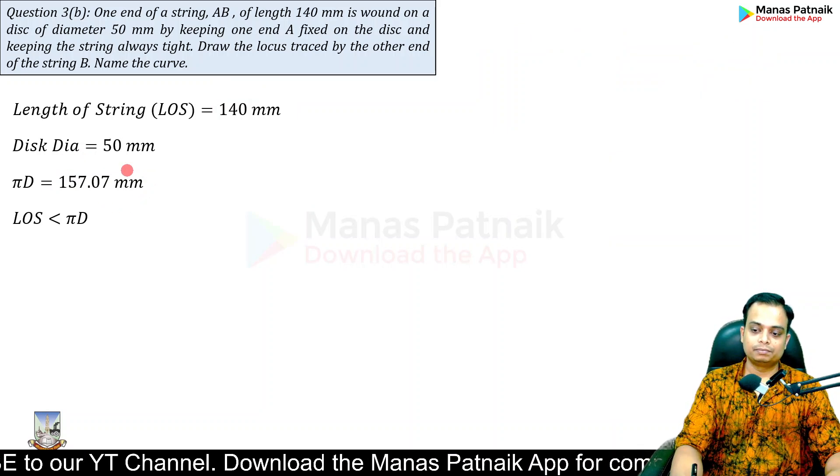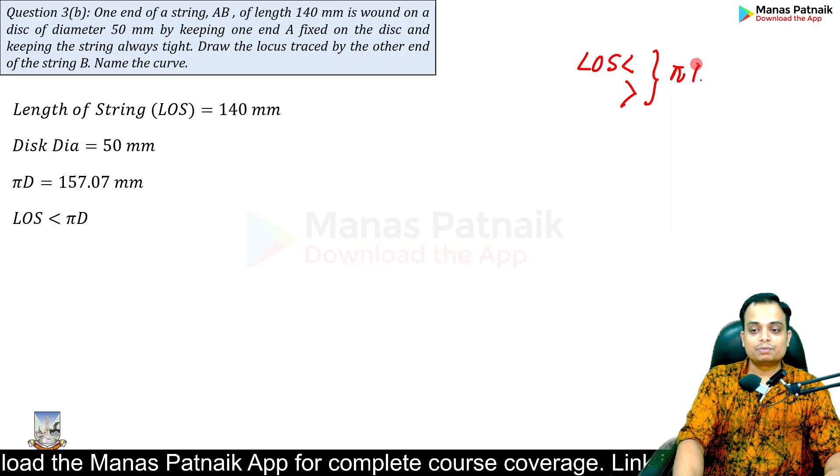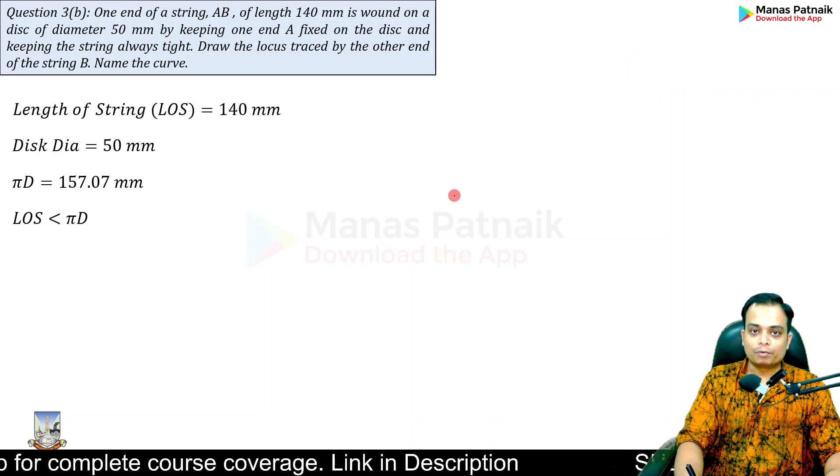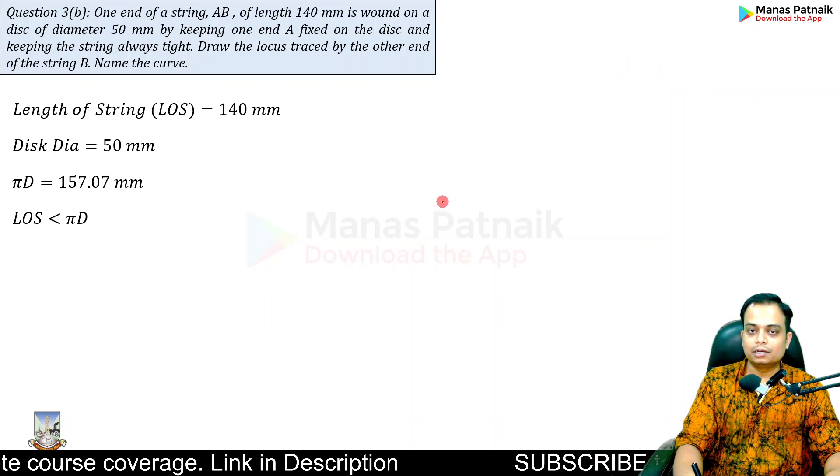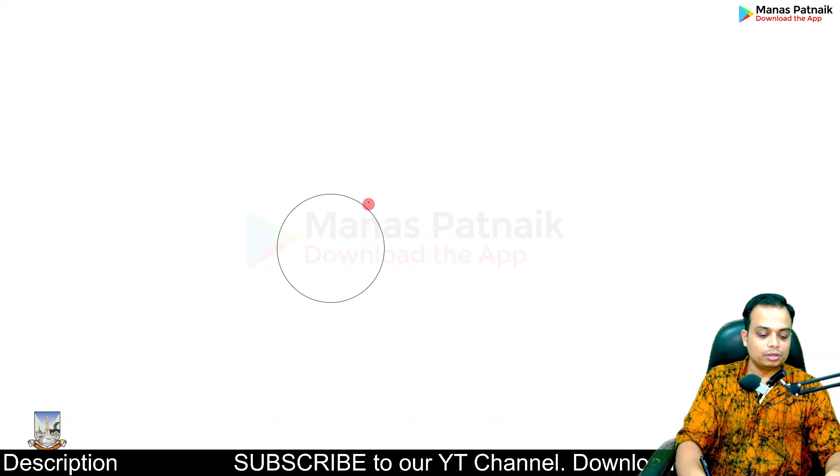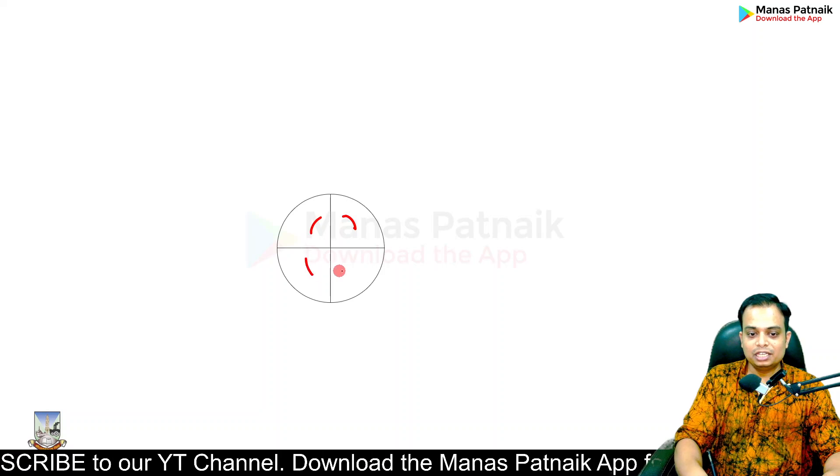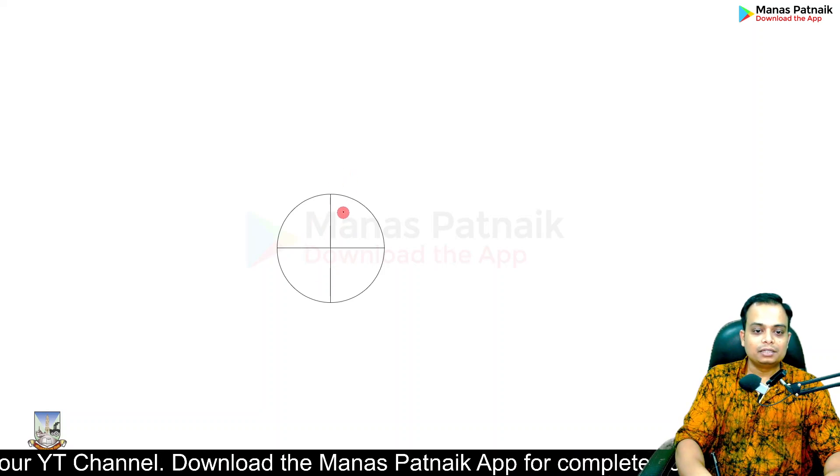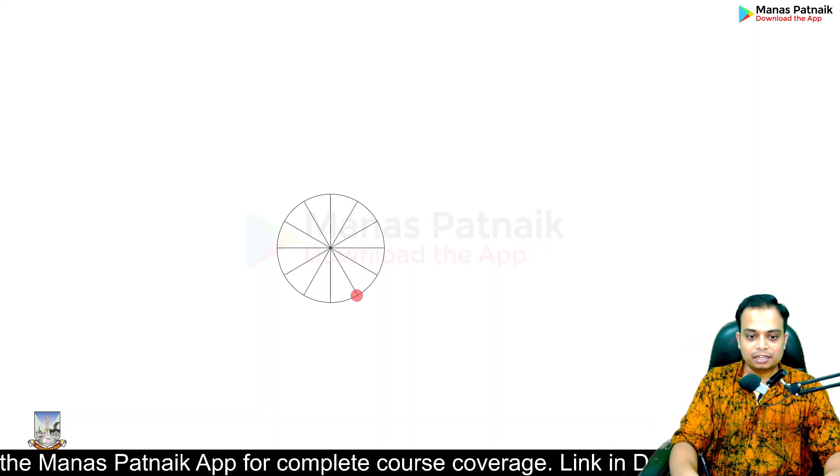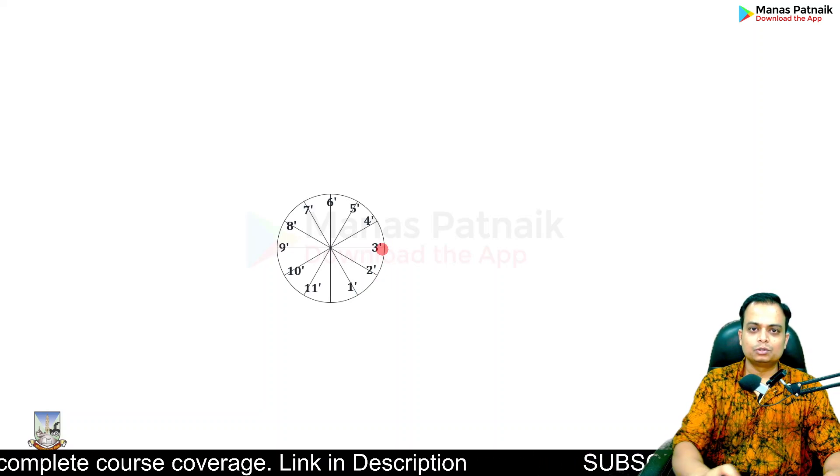It doesn't matter if the length of string is less than or greater than the circle circumference πD - the initial construction steps remain the same. We'll start off by making a circle of radius 25. Divide the circle into four equal parts, then divide each of these parts into three equal parts, making a total division of 12. Now let's number them starting from this point: 1', 2', 3', and so on.